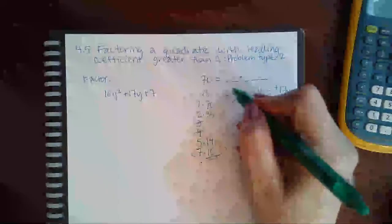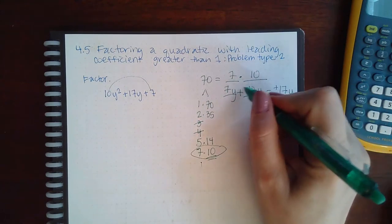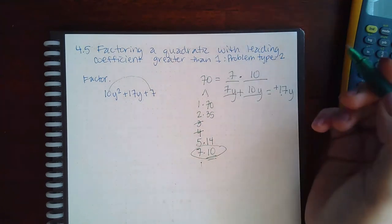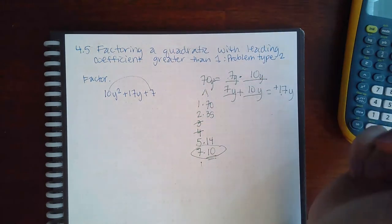So I know it's going to be 7 and 10. I need a positive 17, so they both need to be positive. And if they both are positive, they do give me 70. And if you throw the y here and you throw the y here, you get y squared when you multiply.